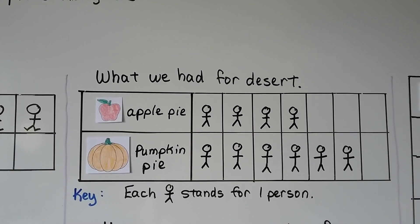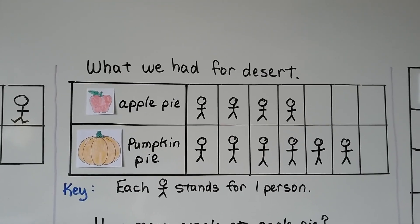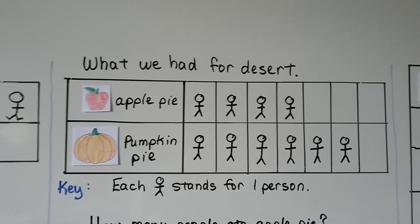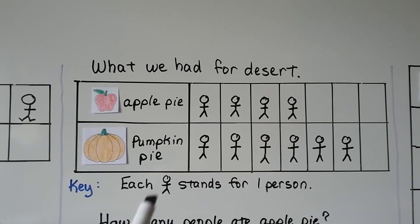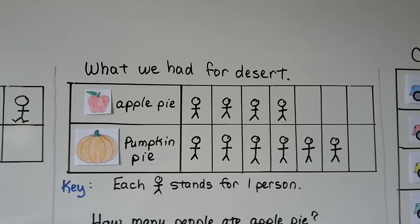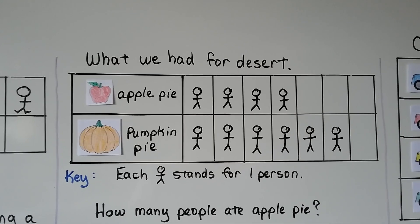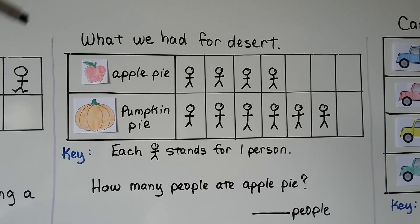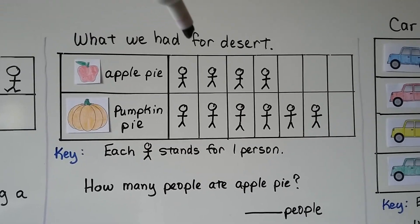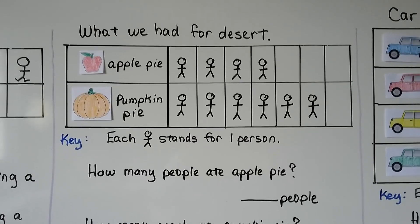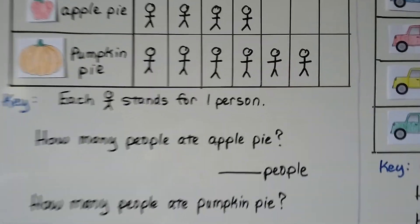Here we have a picture graph of what we had for dessert. These people had apple pie or pumpkin pie. Our key tells us that each little stick person stands for one person. So how many people ate apple pie? We look at the picture graph and count: one, two, three, four. Four people had apple pie.